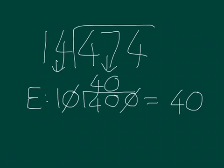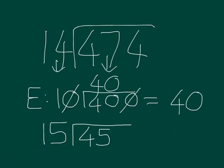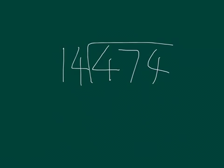We could also do the estimate by rounding the 14 up a little to 15. It's going up a very small amount. And then we could round the 474 to a multiple of 15. I know 15 goes into 45, so let's make it 450. 15 goes into 45, 15, 30, 45, three times. So it goes into 450, 30 times. So there's our potential estimates, 30 or 40, somewhere around there. So let's begin.